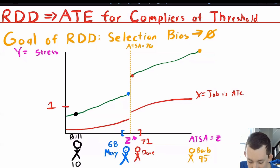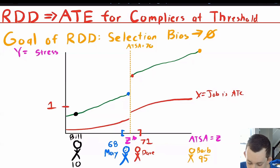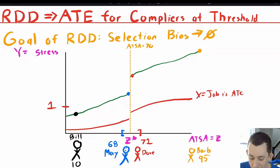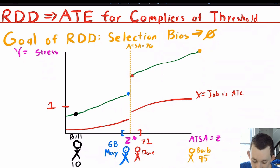Let's make it extreme: we have four people — Bill scored a 10, Mary scored a 68, Dave scored a 71, and Barb scored a 95. If I compared everyone to the right of the threshold to everyone to the left, I'd be comparing Dave and Barb to Bill and Mary. Barb and Bill are probably different for reasons beyond one becoming an air traffic controller. But Dave got a 71 and Mary got a 68 — that's sort of random, maybe each guessed on one question and ended up on different sides of the threshold.